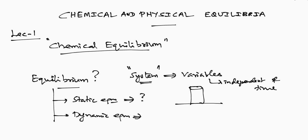Whereas, there are some equilibria — specifically chemical equilibrium or physical equilibrium — where there is some movement in the particles or the reaction. Even though the movements exist, the system remains in equilibrium. We call this type of equilibrium as dynamic equilibrium. This term dynamic equilibrium is very much suitable for chemical and physical equilibrium reactions. I will give much more clarity on dynamic equilibrium as we go along in this lecture.